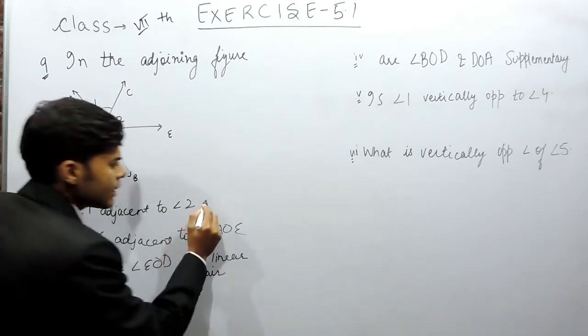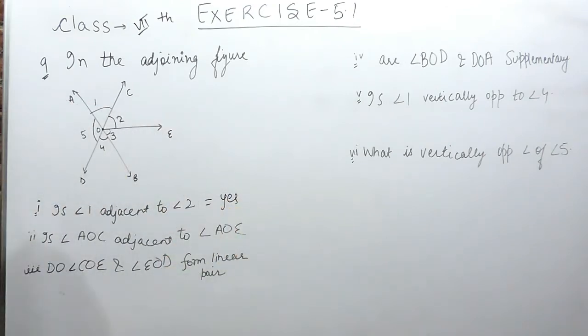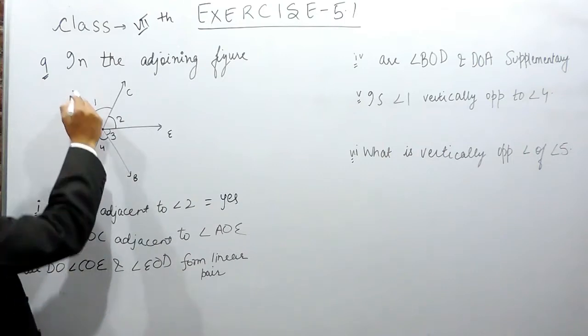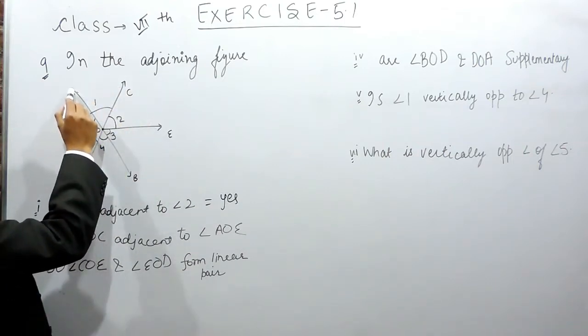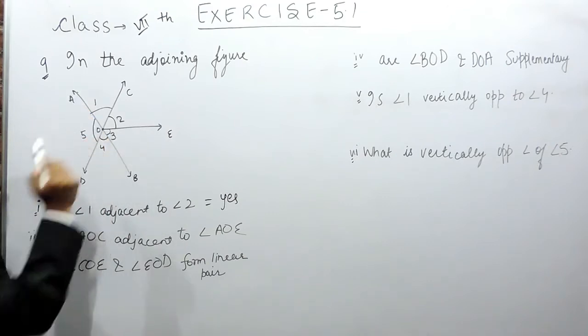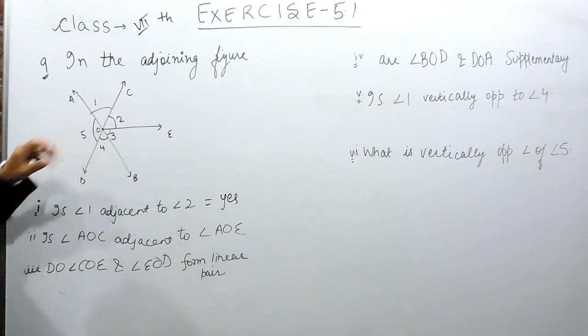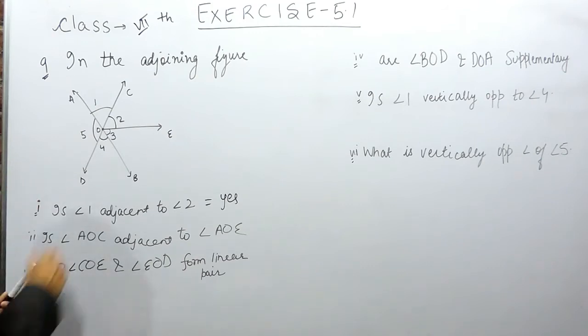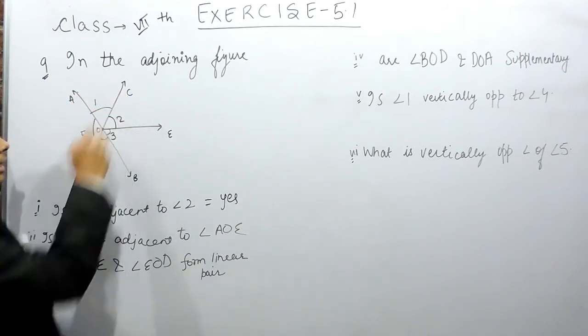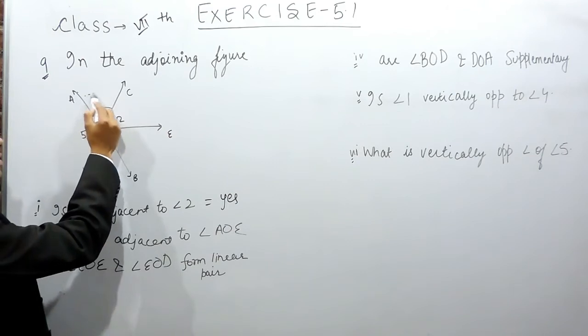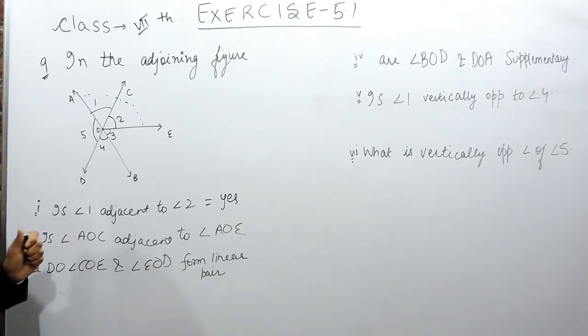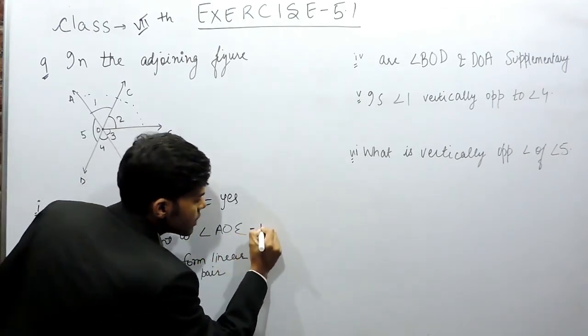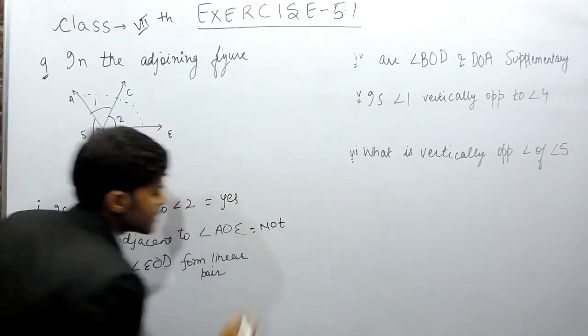Now in part 2, angle AOC and angle AOE. In this you can see that AO is the common side, O is the common vertex, but these two angles are overlapping each other. Because AOC is this angle and AOE is this complete angle. Now because they are overlapping each other, this means that they are not adjacent angles.